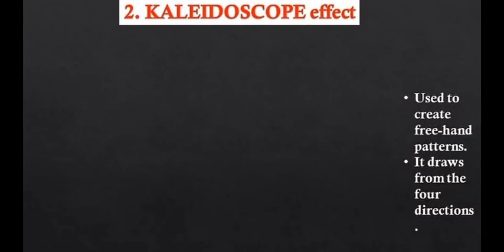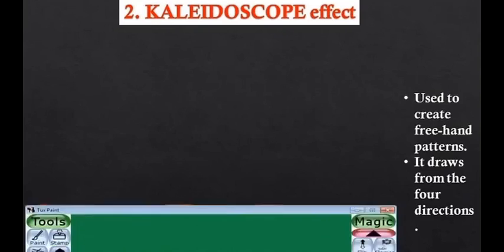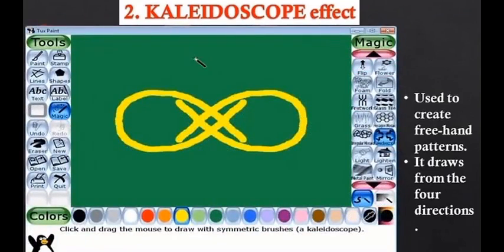Kaleidoscope effect - this tool is used to create freehand patterns. The most amazing feature of this tool is that even if we move the magic wand from a single point, it draws from all four directions.